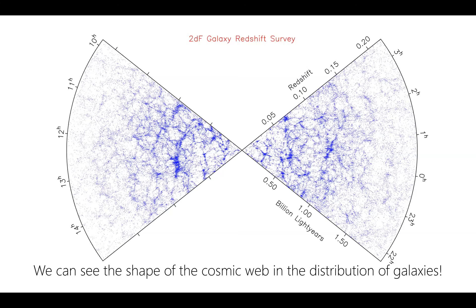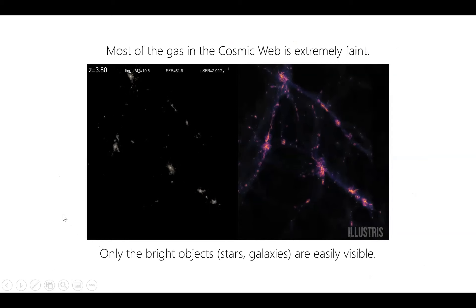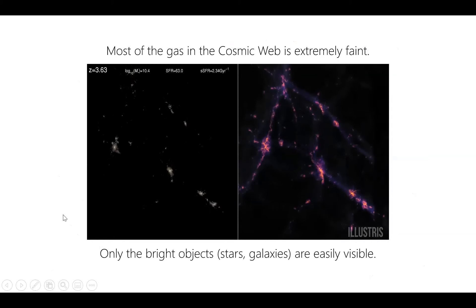In astronomy, the farther away you look, the farther back in time you're looking. We see the sun as it was eight minutes ago; if something is a billion light years away, we're seeing it as it was a billion years ago. Going farther out in this map there appears to be less structure — though at these redshifts that may be more a matter of not having enough sources.